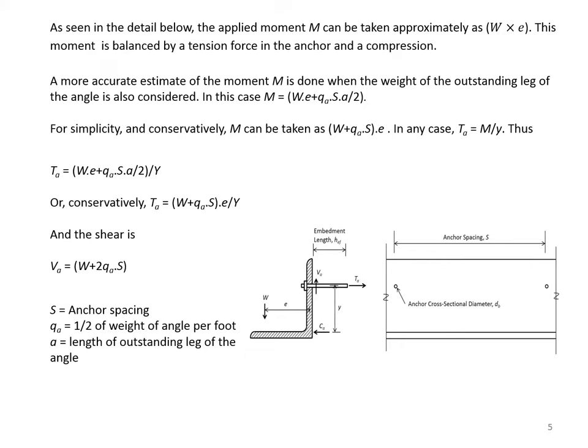Therefore, the tension force would be W times E plus QA times SA over 2, divided by Y, or conservatively as W plus QA times S, times E, divided by Y. And the shear is W plus QA times S. S is the anchor spacing, QA is one half of the weight of the angle per foot, and A is the length of the outstanding leg of the angle. The dimension Y is obtained from the AISC manual, where it is listed for different size angles.